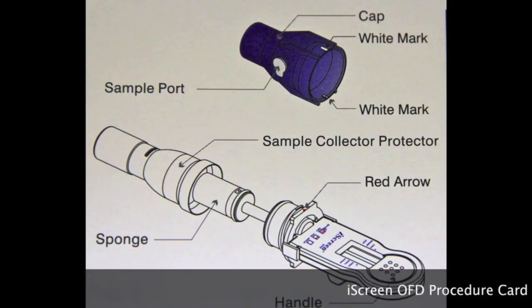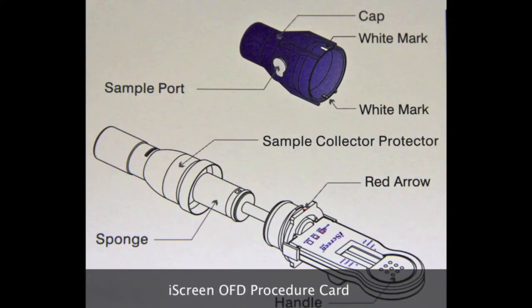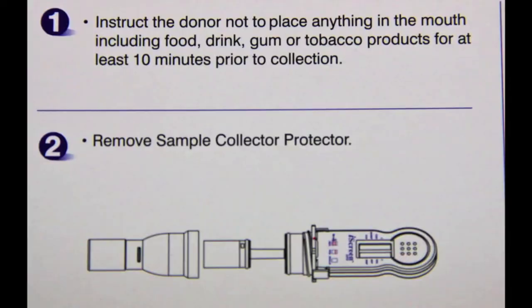The iScreen OFD drug test procedure. First and foremost, for accurate results, it's very important to instruct the donor to not have anything in their mouth — including food, drinks, gum, or tobacco products — for at least 10 minutes prior to the collection.